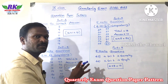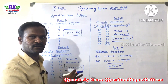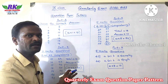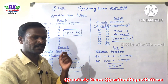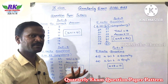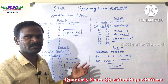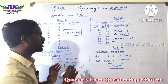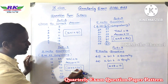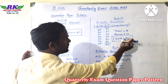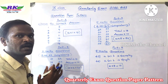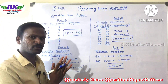So the overall pattern is: Part 1 — 14 marks, Part 2 — 20 marks, Part 3 — 50 marks, Part 4 — 16 marks. Total 100 marks. This is the question paper pattern for 9th standard. Okay?